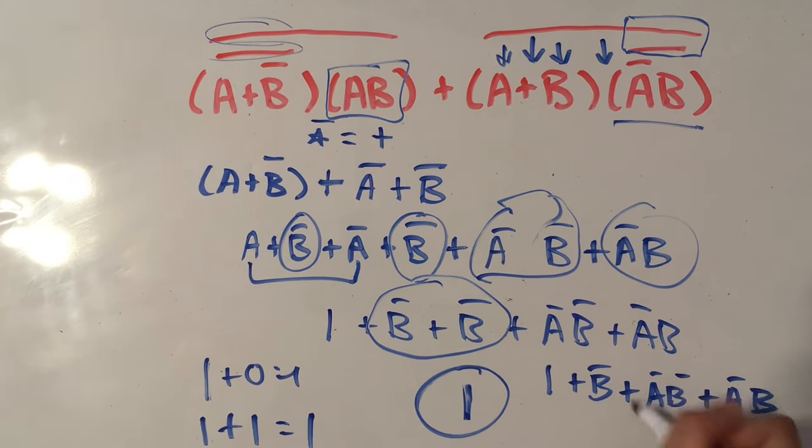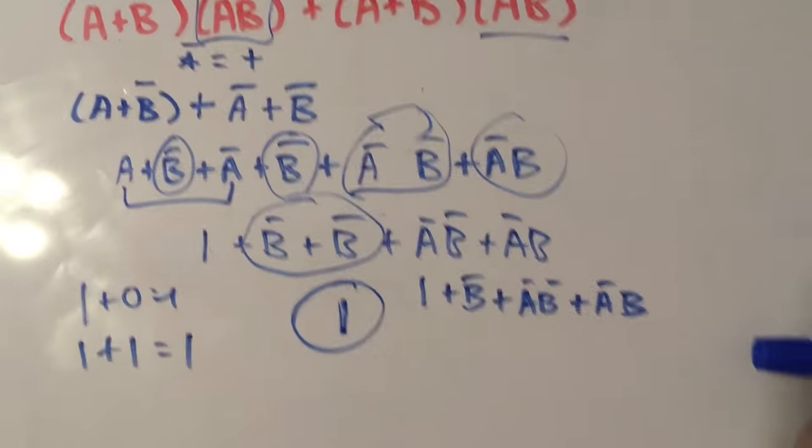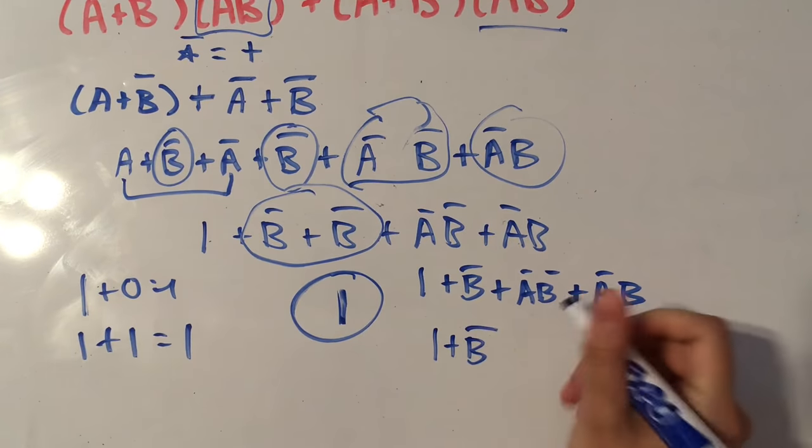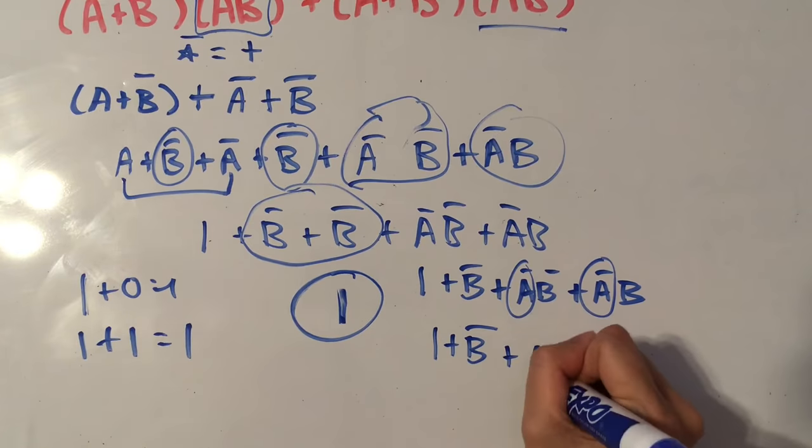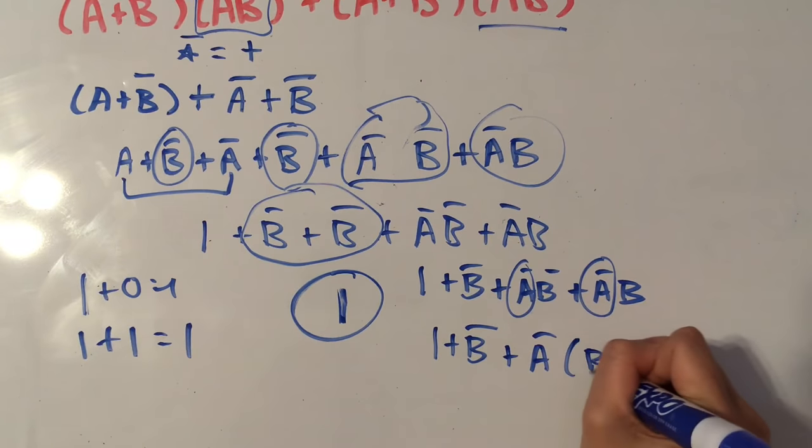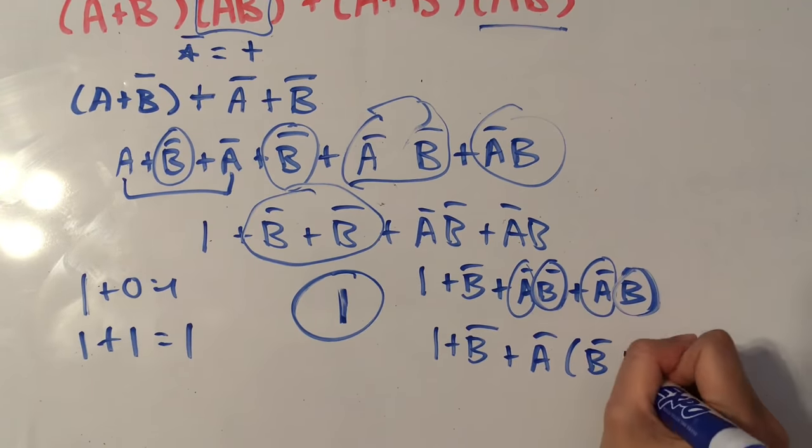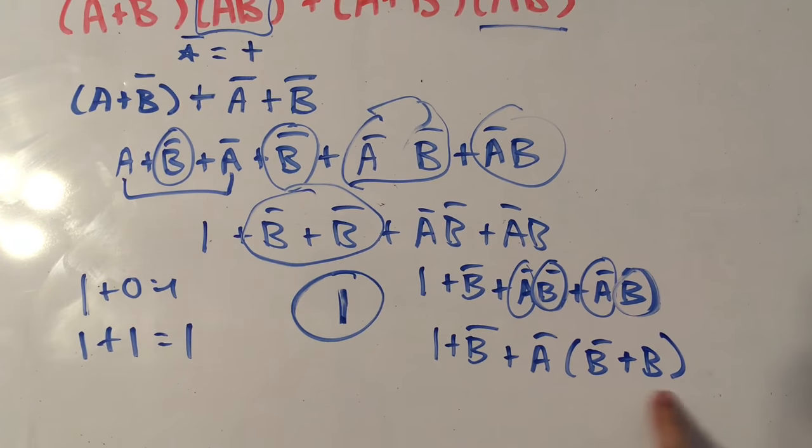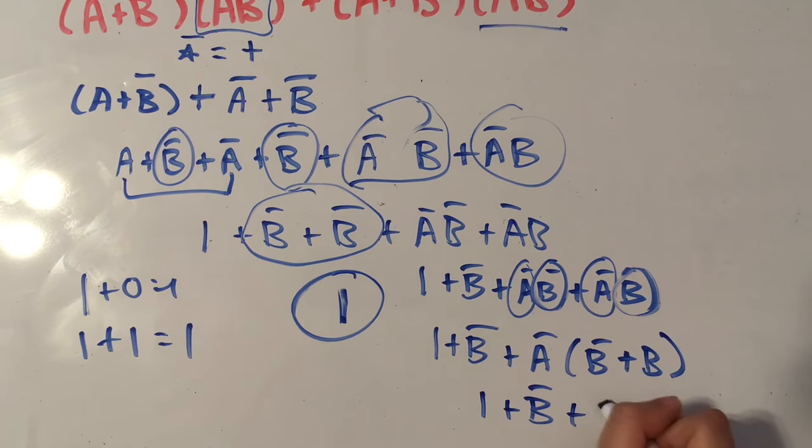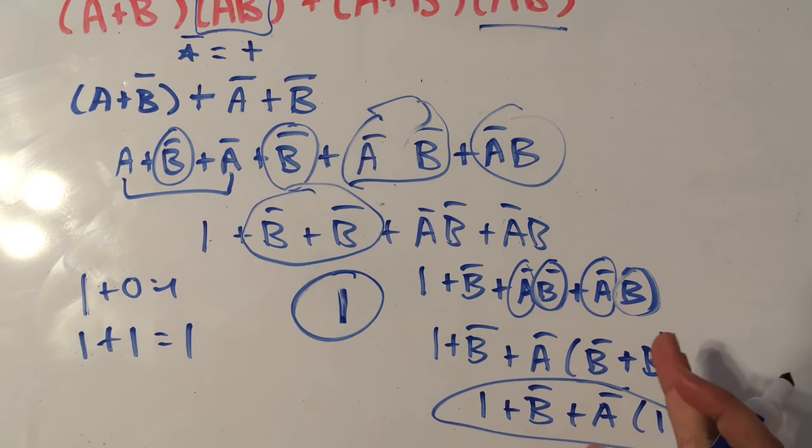And then you can factor out a NOT A. So we'll keep this stuff by itself. So we have one plus NOT B. And then we factor out the NOT A here. So plus NOT A times NOT B, which is this, plus B. And that's going to simplify to one. So we have one plus NOT B, plus NOT A times one. And again, whatever B and A are, this expression will always equal to one. Because one plus anything is just going to equal one in Boolean algebra.